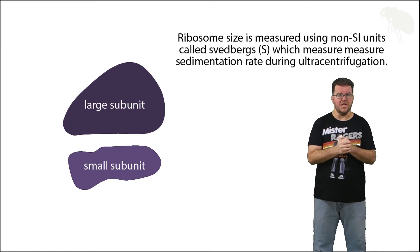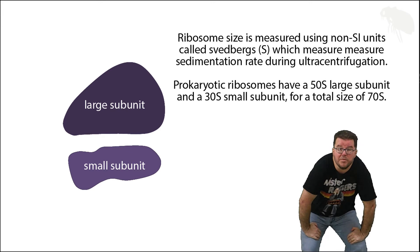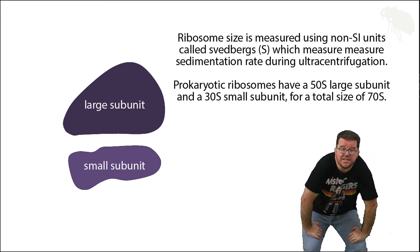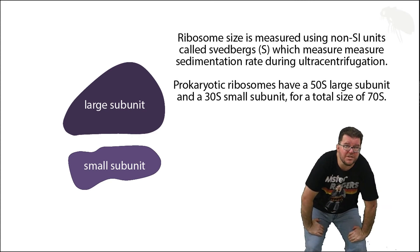So first off, prokaryotic ribosomes have a 50S large subunit and a 30S small subunit. The entire prokaryotic ribosome is a 70S ribosome. So right there they don't add up neatly. That's prokaryotes.